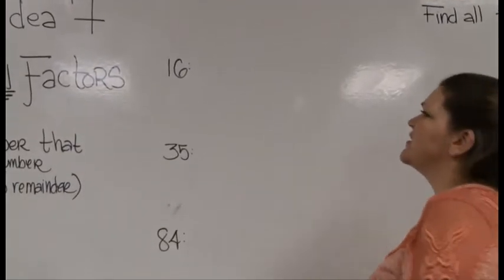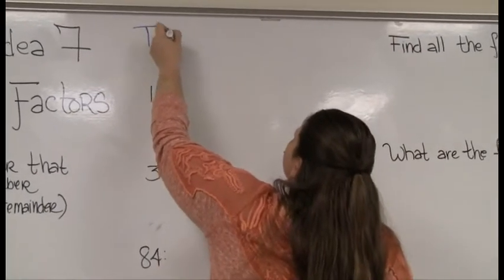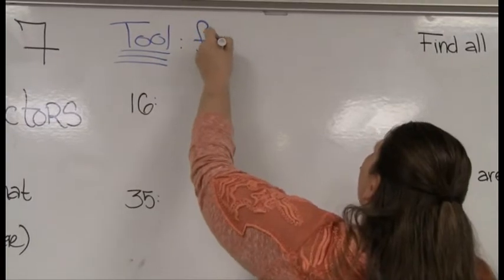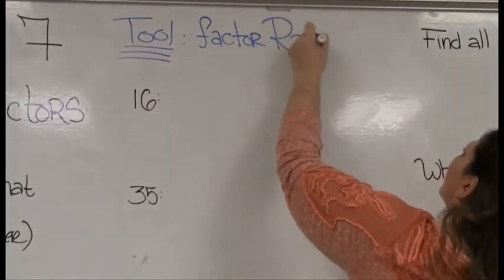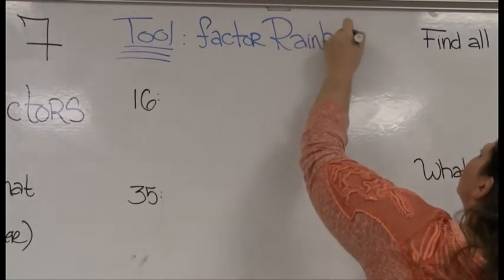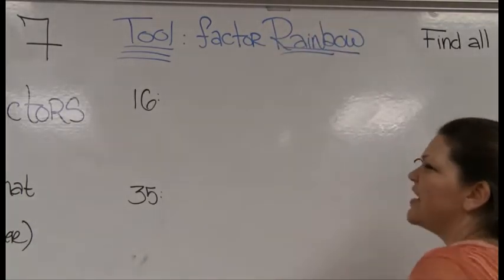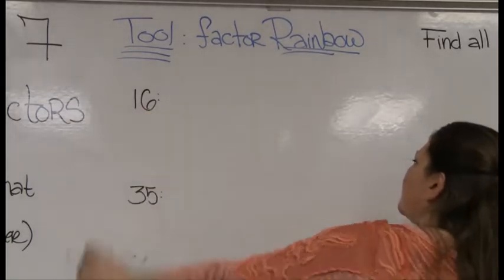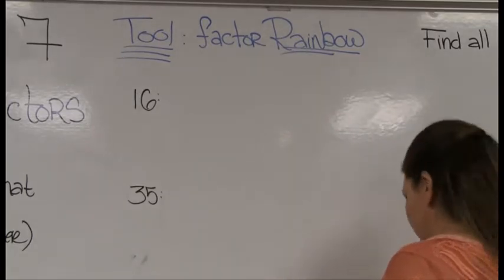The tool that we use to find all the factors is what we call a factor rainbow. I remember that because you can find everything under the rainbow. So let's go ahead and do a factor rainbow for 16 so we can see all its factors.